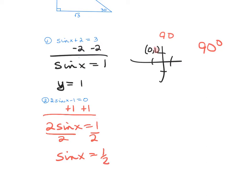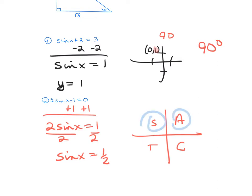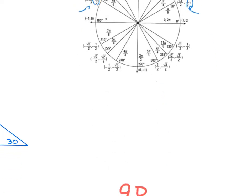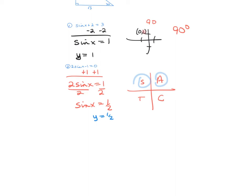Remember, sine looks at y. So I'm going to do my all students take calculus — I'm going to look to see which quadrants sine is positive in, and it's positive in quadrants 1 and 2. I go to my unit circle and find where y equals 1 half. I can see that y is 1 half at 30 degrees and also at 150. So my two answers are 30 degrees and 150 degrees.